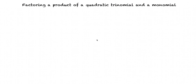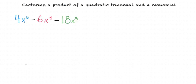Today we'll be learning how to factor a product of a quadratic trinomial and a monomial. Let's break it down. Imagine we're asked to factor a polynomial that looks like this. This looks really hard. How are we going to factor this?